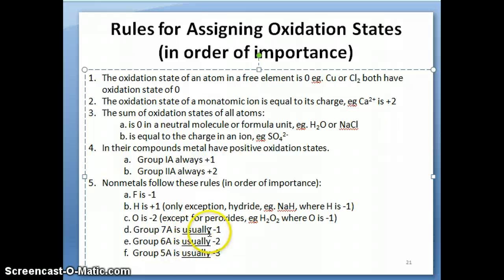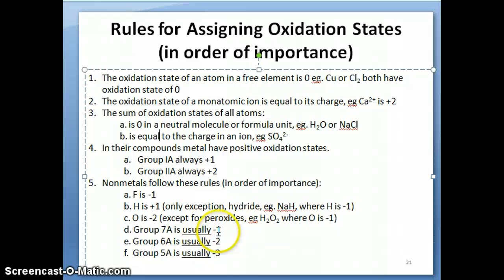I underline the word 'usually' because it's very important — it's not always the case. Chlorine, which is a Group 7A element, is sometimes negative one, but it can also be other numbers. You have to be careful: if other rules precede this one for a given element, you must look at those numbers first before defaulting to negative one.